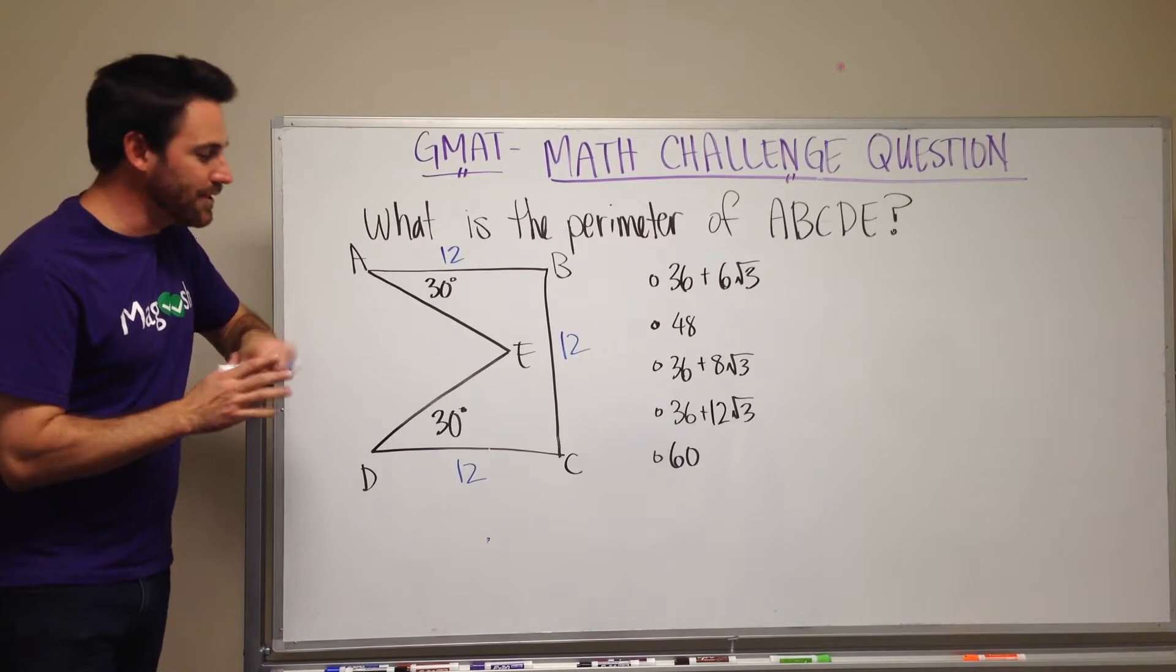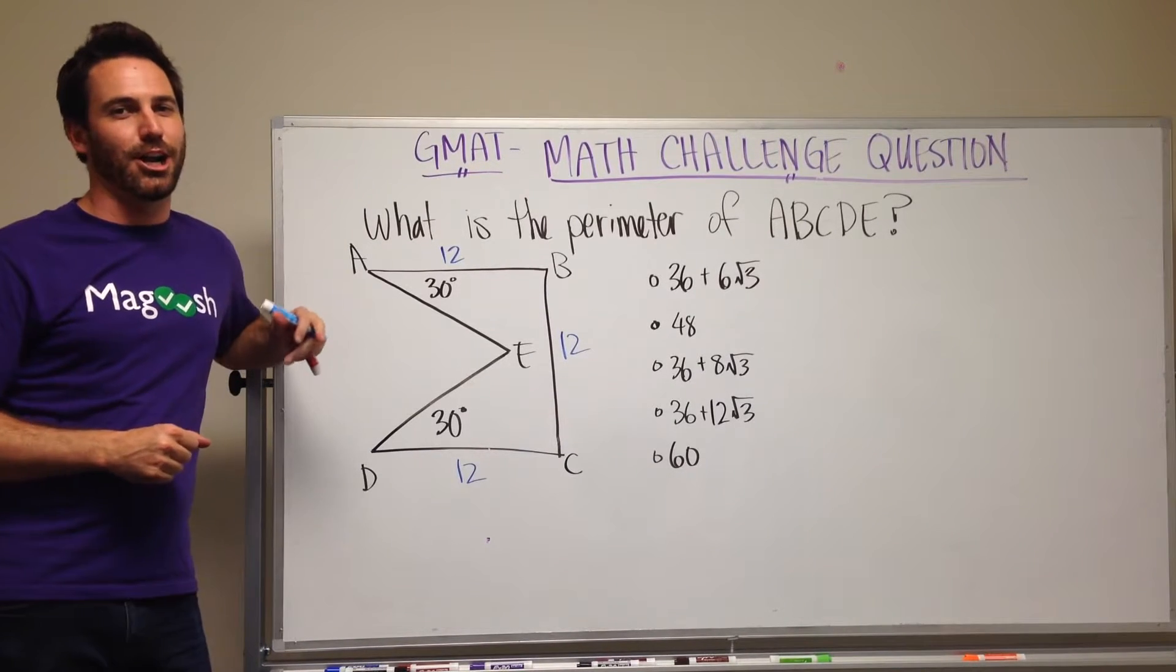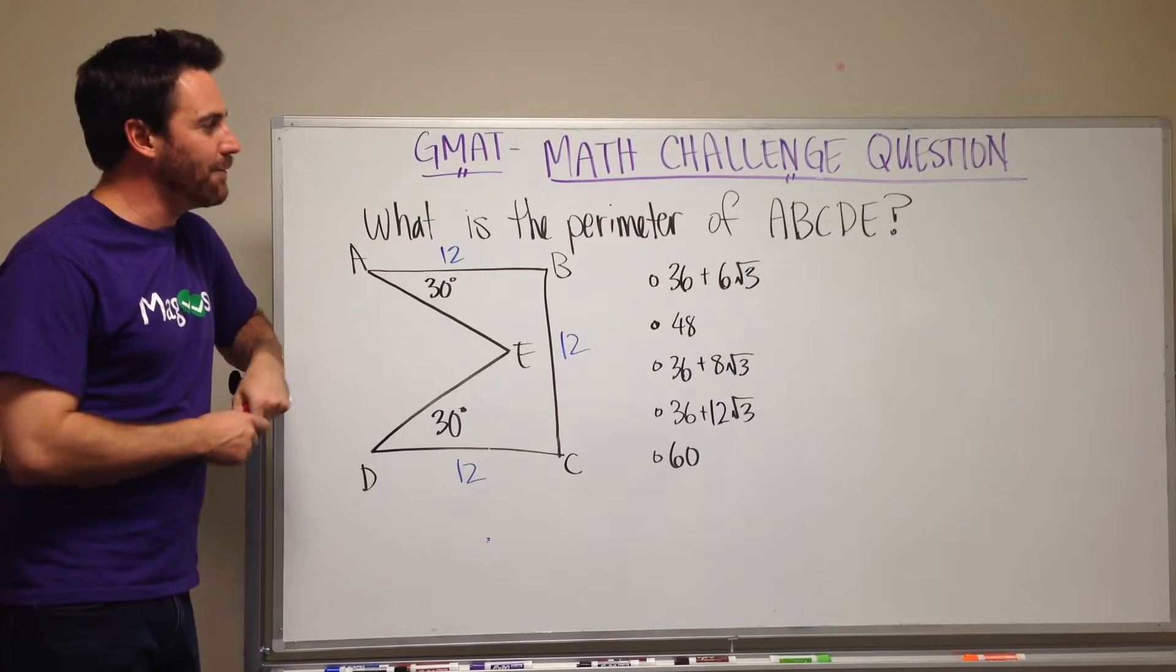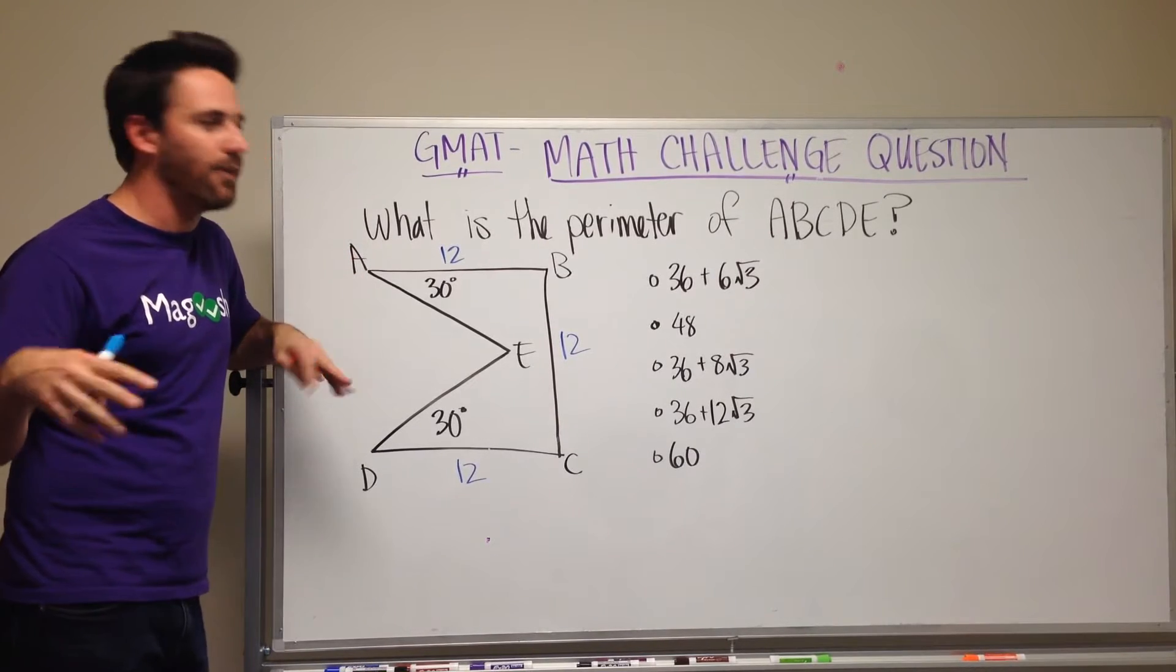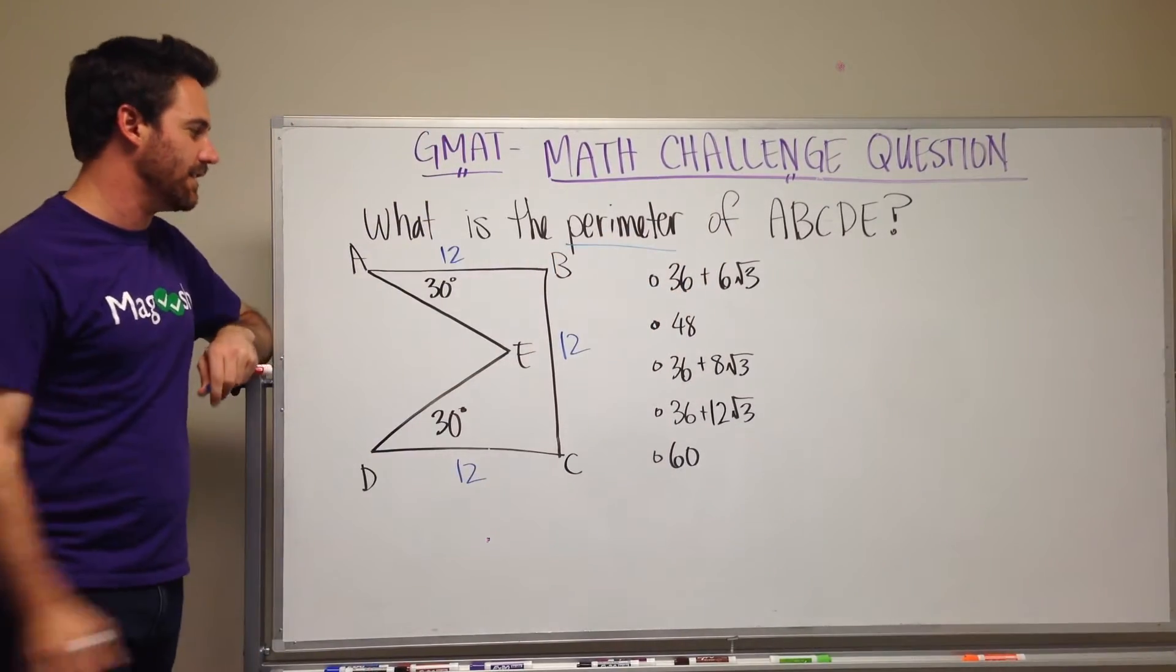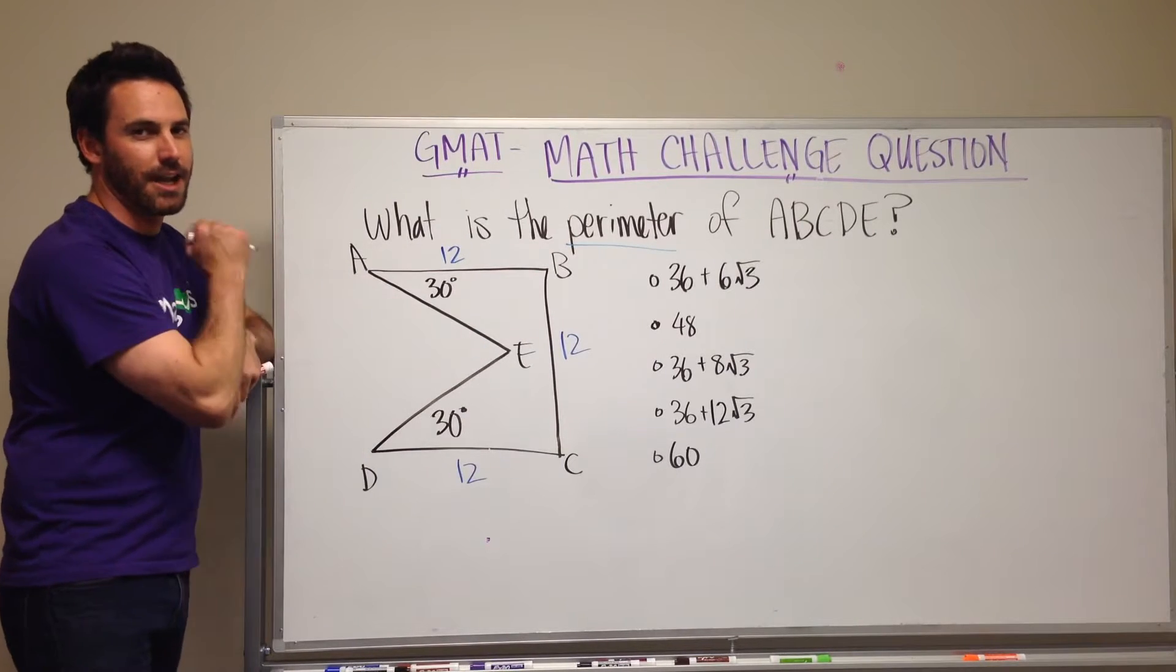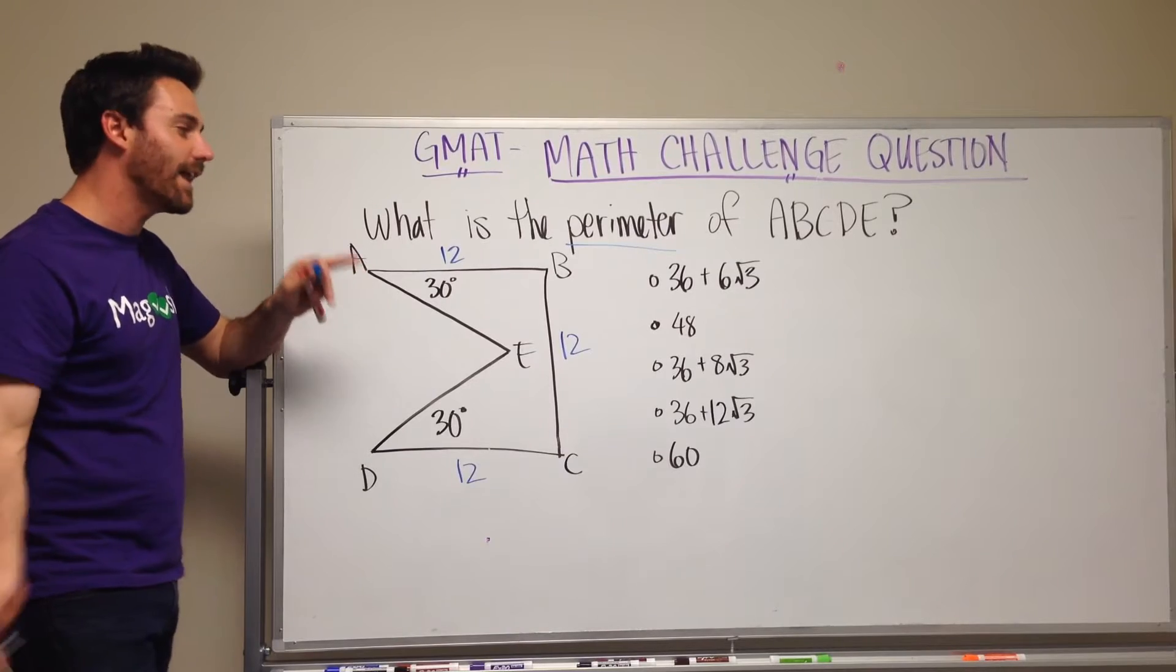So this is a great question for a couple of reasons. One, it involves the perimeter of a funny shape and I always enjoy problems like this. The first thing I like to do when I get into a math problem is just figure out what am I being asked to do and what have they given me. So they're asking me about the perimeter of A, B, C, D, E. And of course this part as well because it's an enclosed shape and if you're going to get the perimeter of something it has to be an enclosed shape.